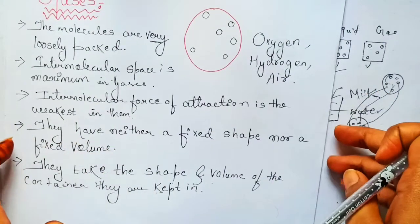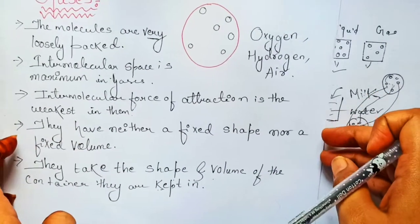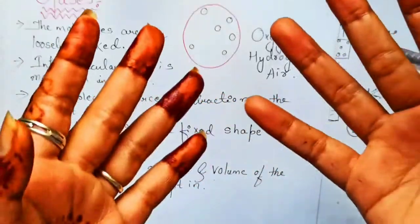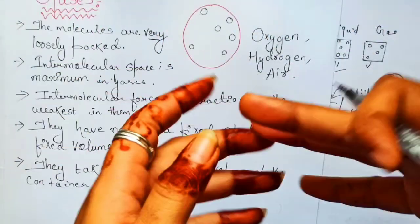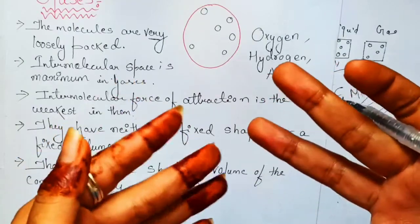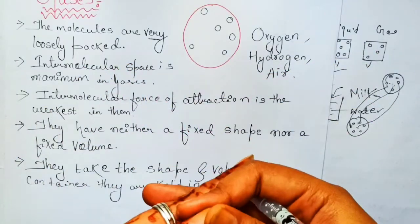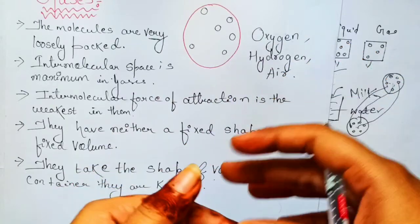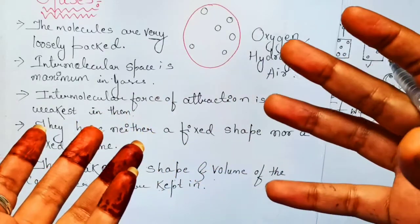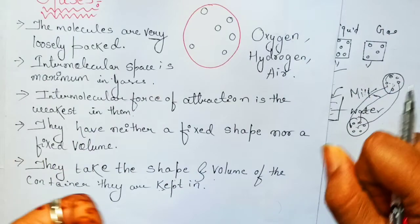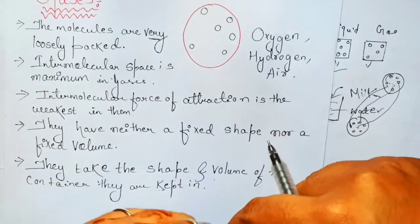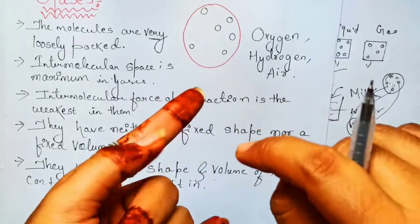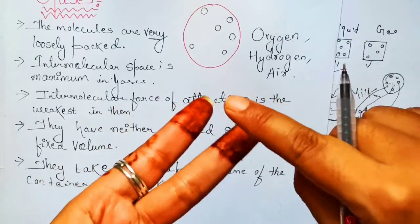Gases have neither a fixed shape nor a fixed volume. If you think about any gas like oxygen or hydrogen, we can't even see them, so we have no idea about their shape. They have no fixed shape and no fixed volume.